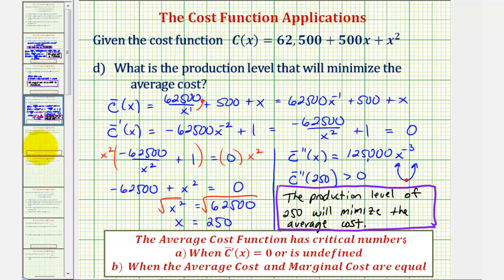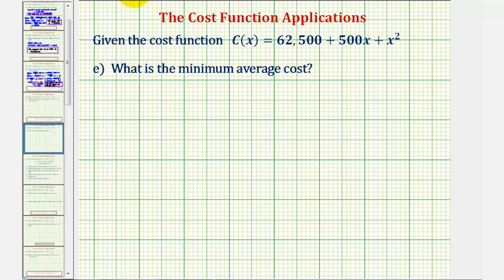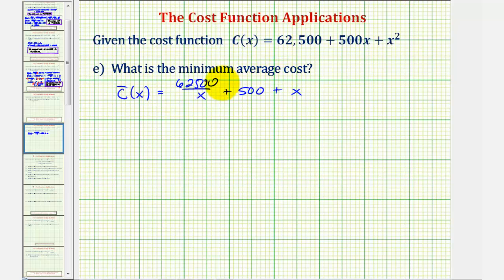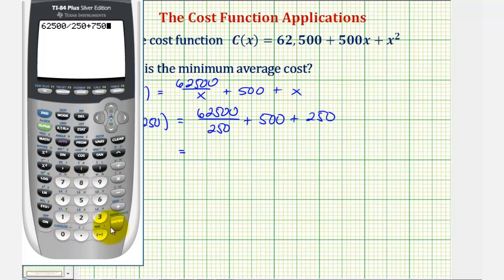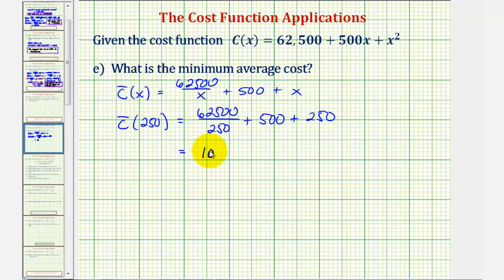For Part E, we determine the minimum average cost. The average cost function is 62,500 divided by x plus 500 plus x, and it is minimized at x equals 250. Evaluating at x equals 250, the minimum average cost per item is $1,000.